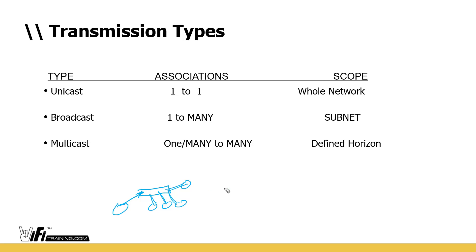Whenever I did the ping, only the first ICMP echo — that's what a ping packet is actually called — failed. Every subsequent one was fine because I had the Layer 2 addressing and could send the frame directly. That type of transmission is called unicast — one to one. The first packet went to everybody via broadcast; I learned about host two, and then sent messages directly to host two.